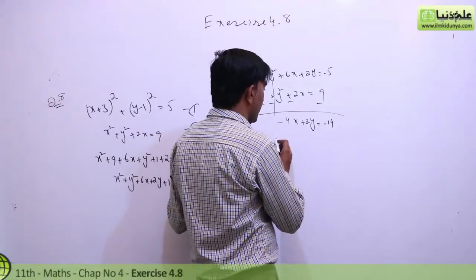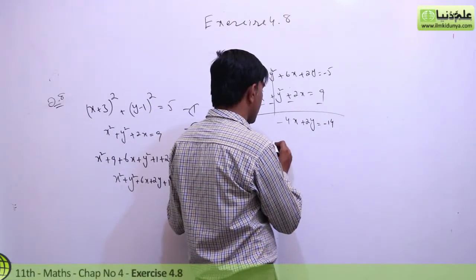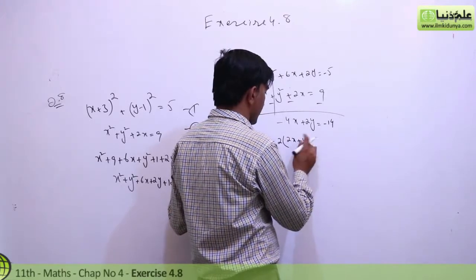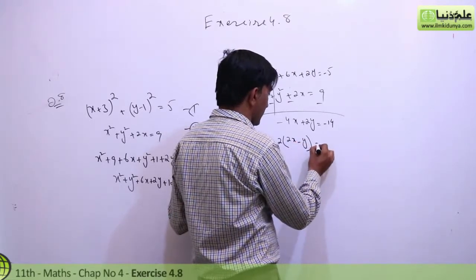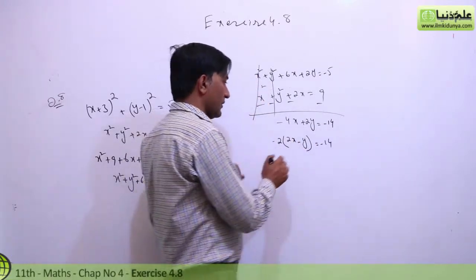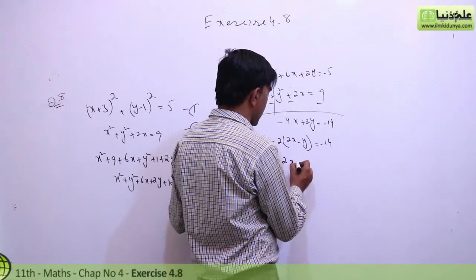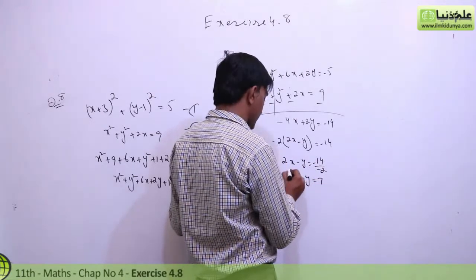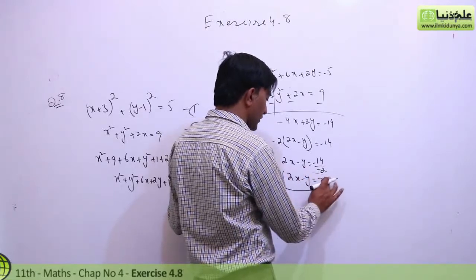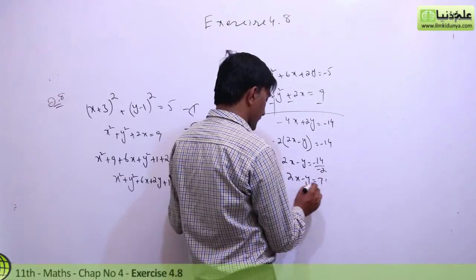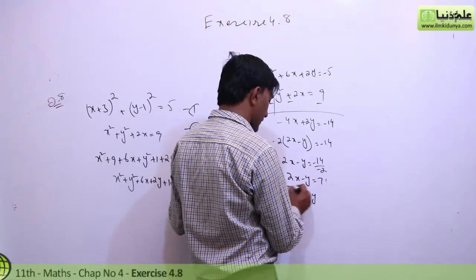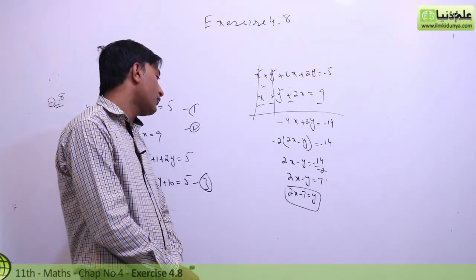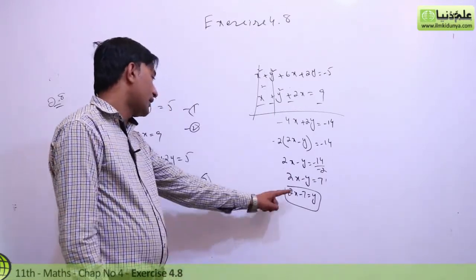We find the linear equation: simplifying to 2x minus y equal to minus 14 over minus 2, so 2x minus y equal to 7. Rearranging this equation, y equal to 2x minus 7. So the linear equation is y equal to 2x minus 7.